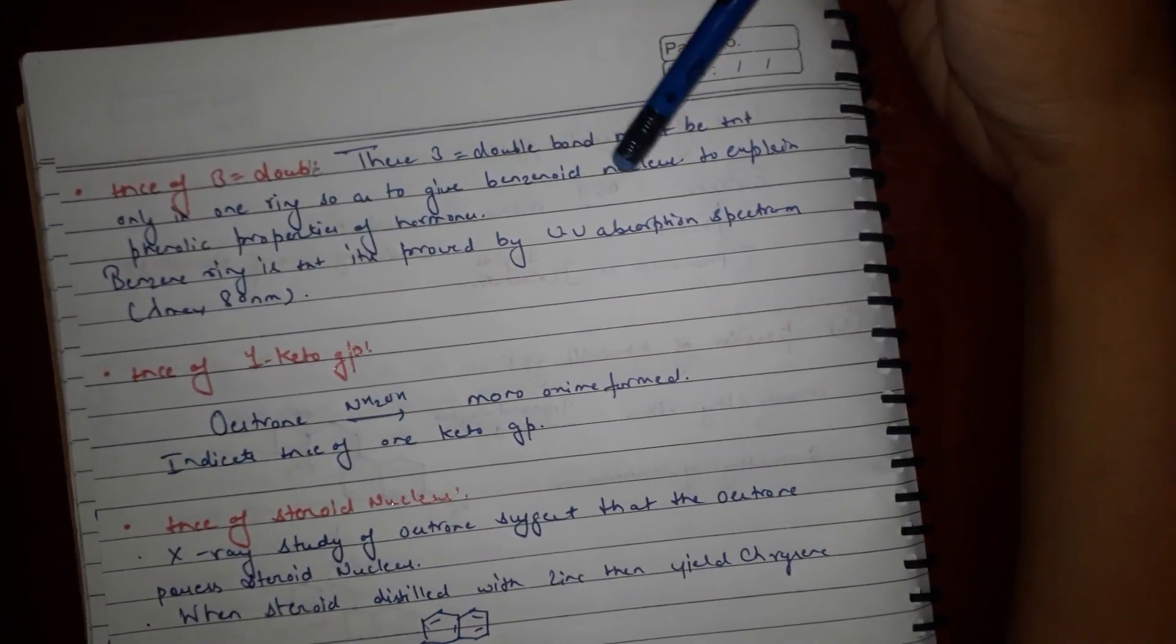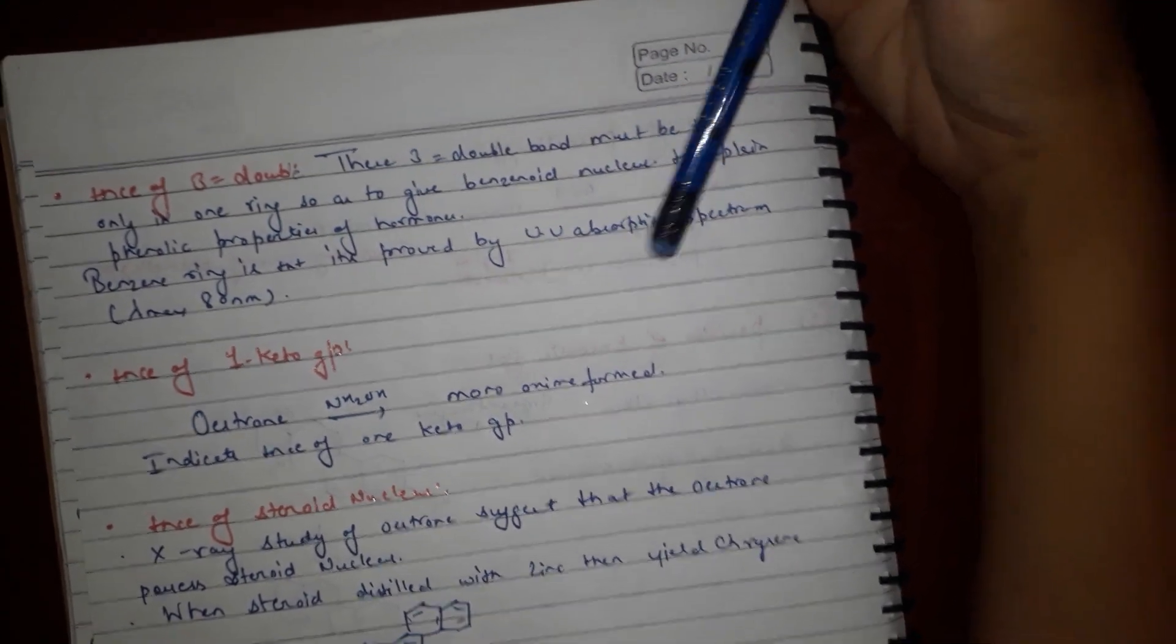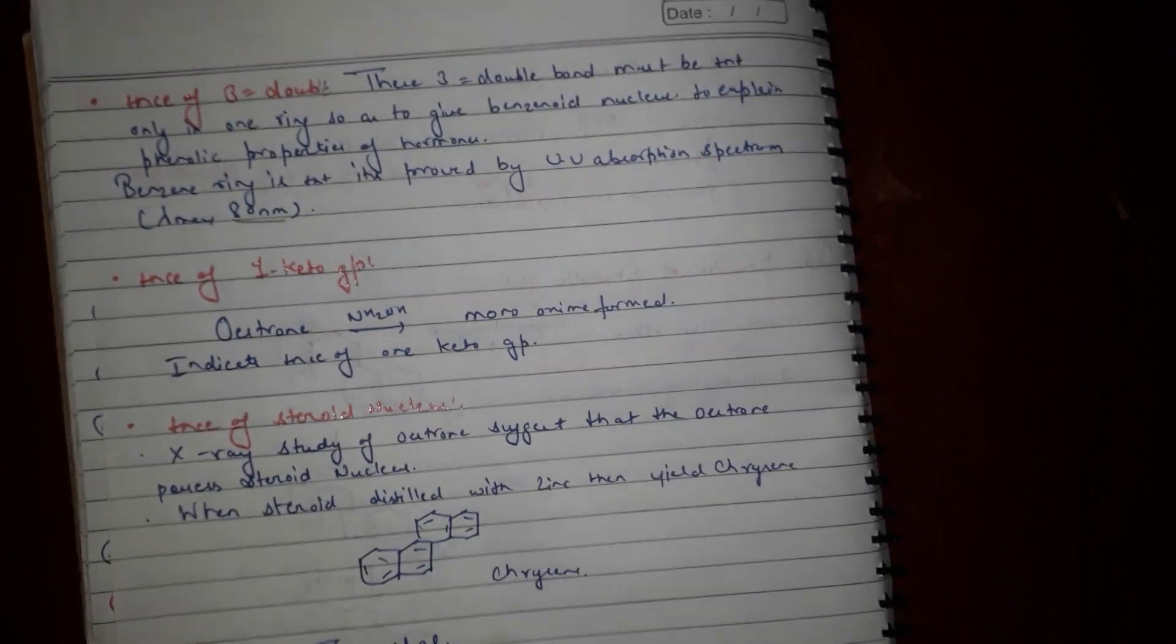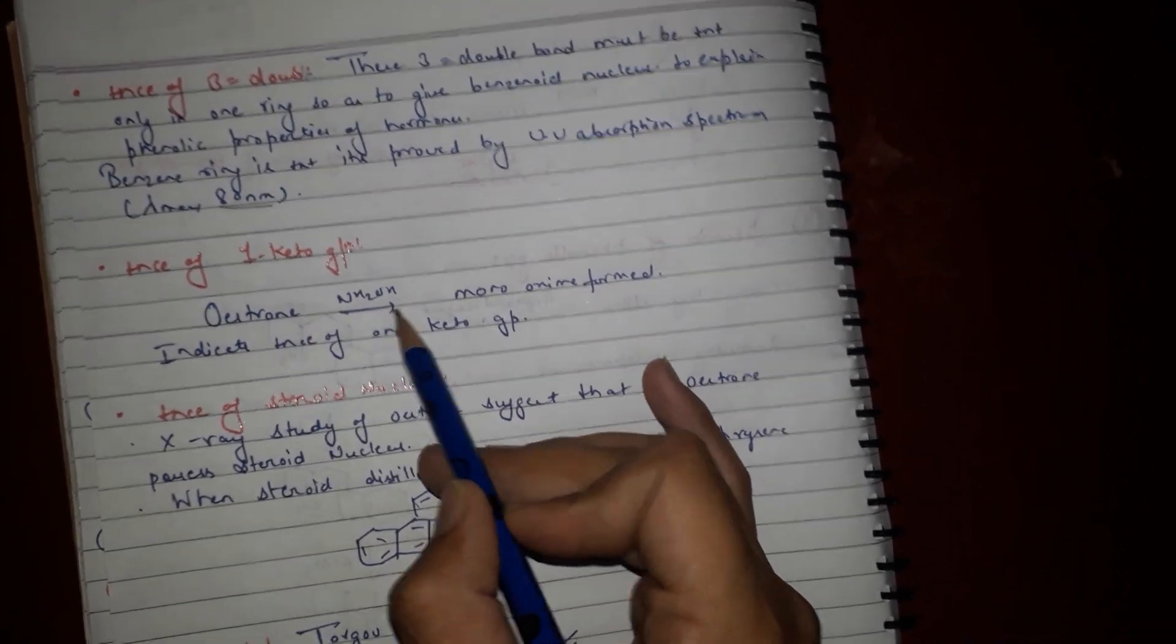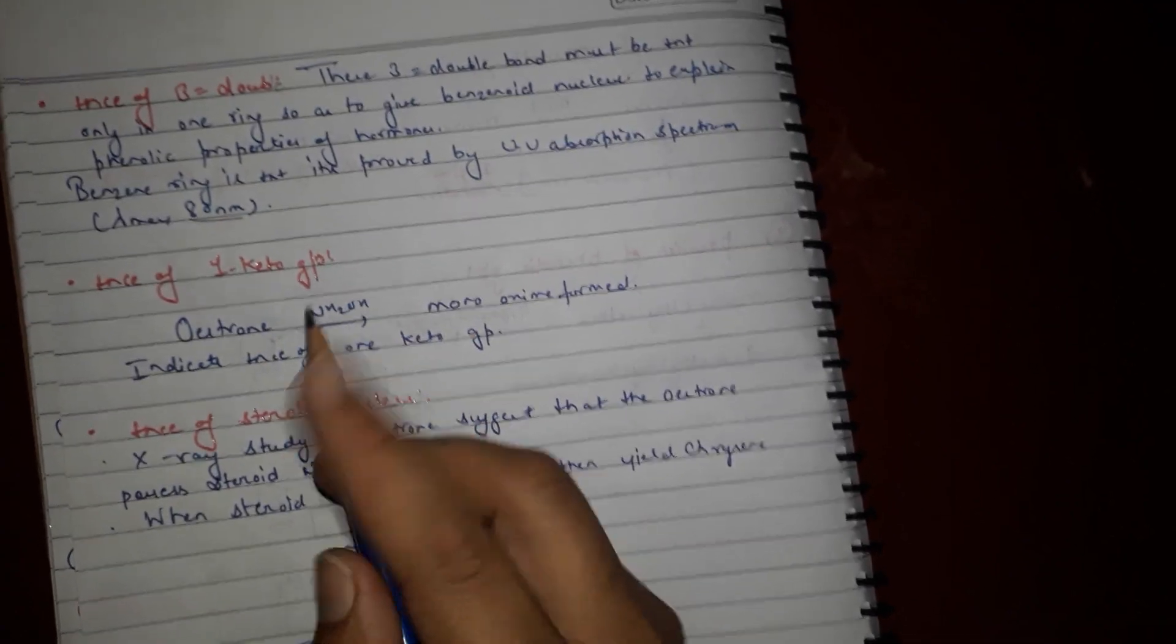Presence of one keto group: estrone on reaction with NH2OH forms an oxime, which shows that there is presence of one keto group.